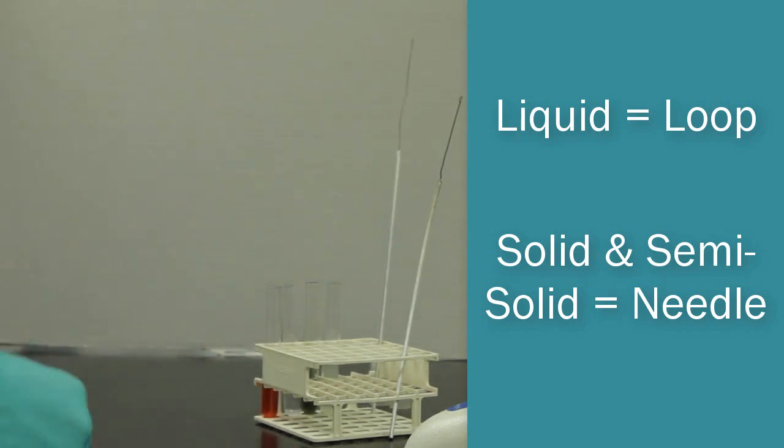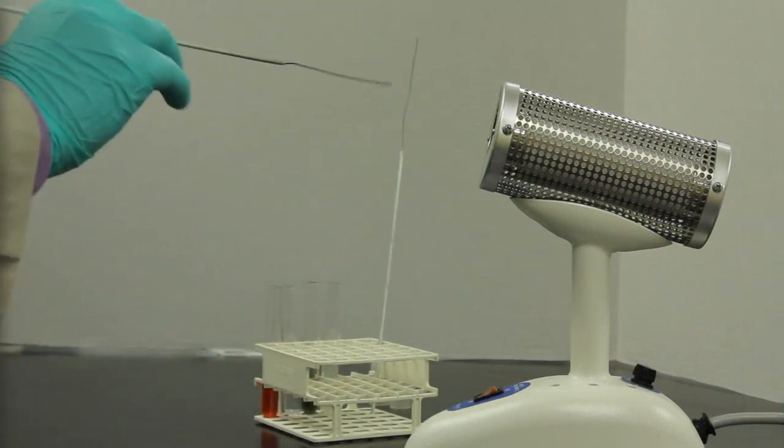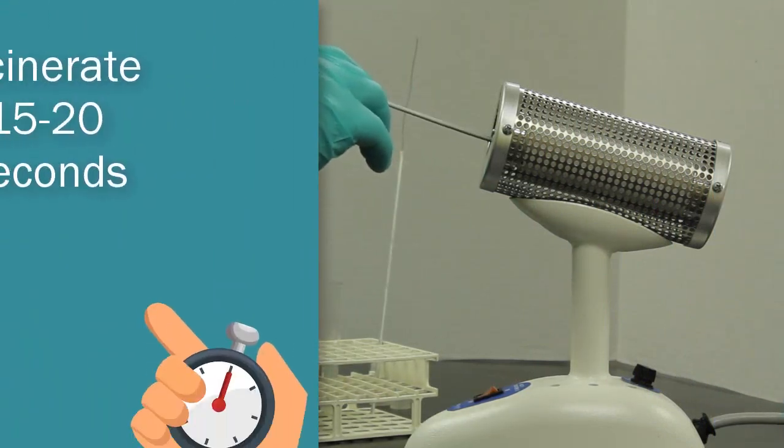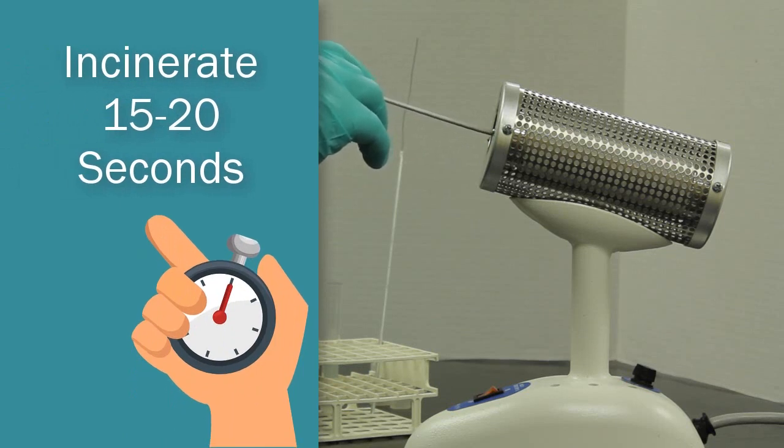In order to inoculate this media, you simply take the loop. We're going to do the liquid first. Insert the loop into the incinerator for 15 to 20 seconds until it's fully sterilized.